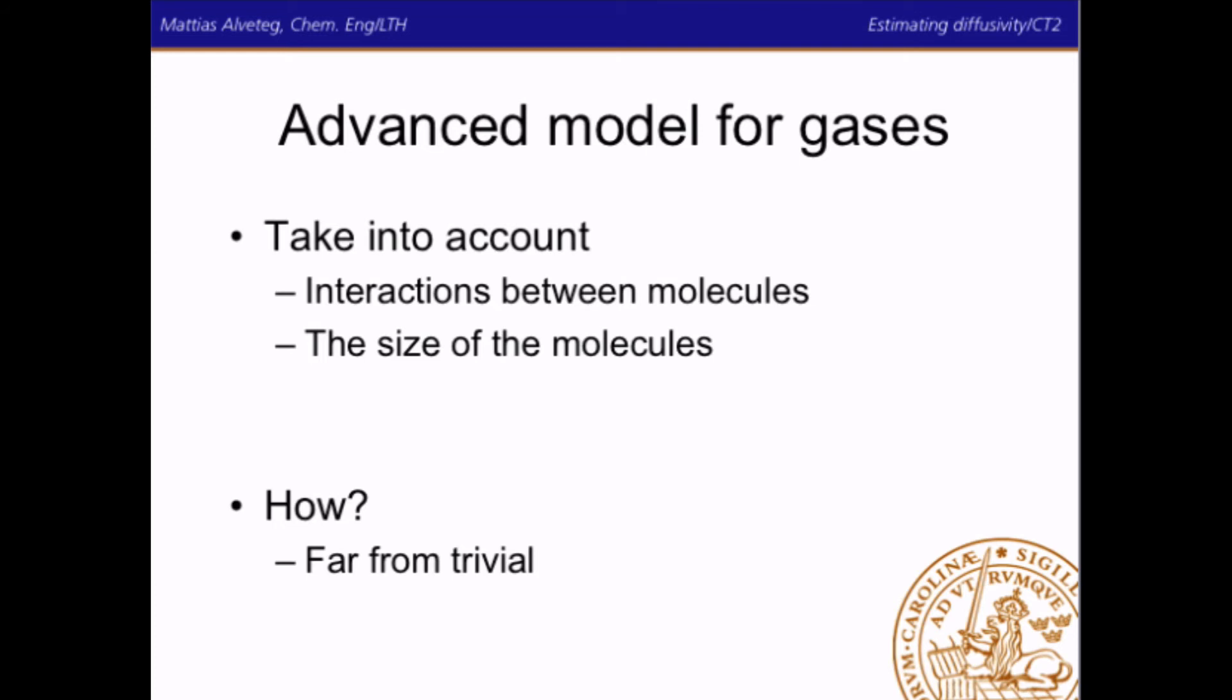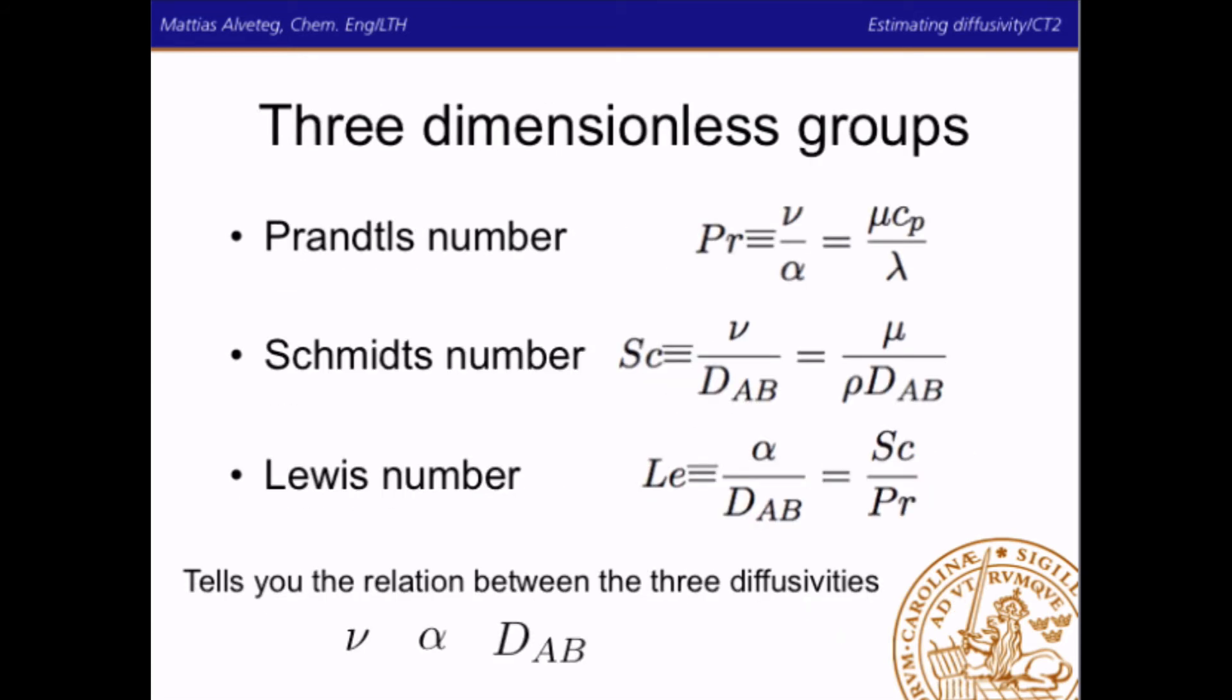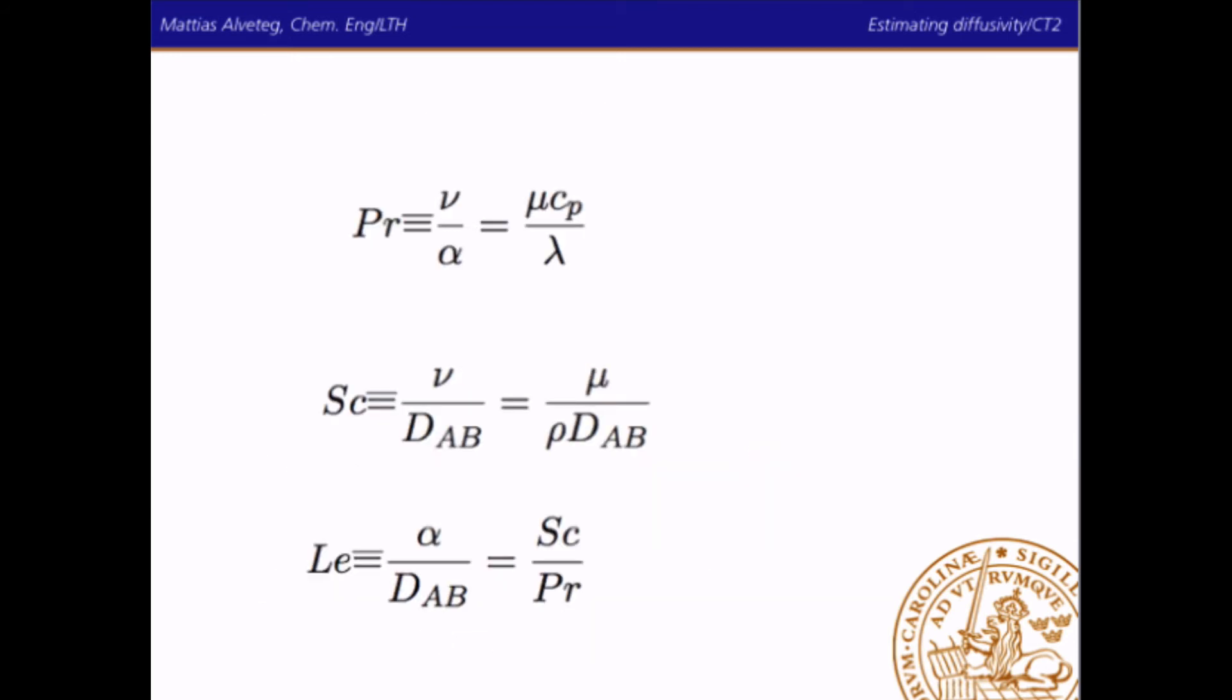What we will instead do is to look at diffusive transport of different things, like mass, heat, and momentum. And the diffusive transport is a constant times the driving force. And for mass, the driving force is the derivative of concentration within space. And this is the energy content, so to say. And this is the momentum content. So you get this diffusivity, and this, and this one here. And we will introduce three dimensionless groups: Prandtl, Schmidt, and Lewis number. That tells you the relation between these three diffusivities.